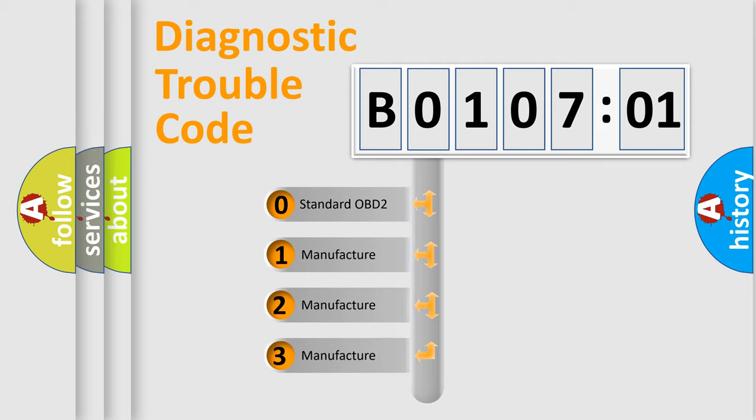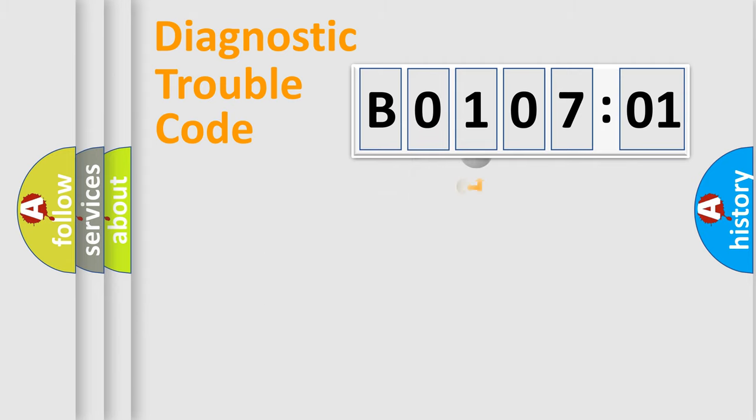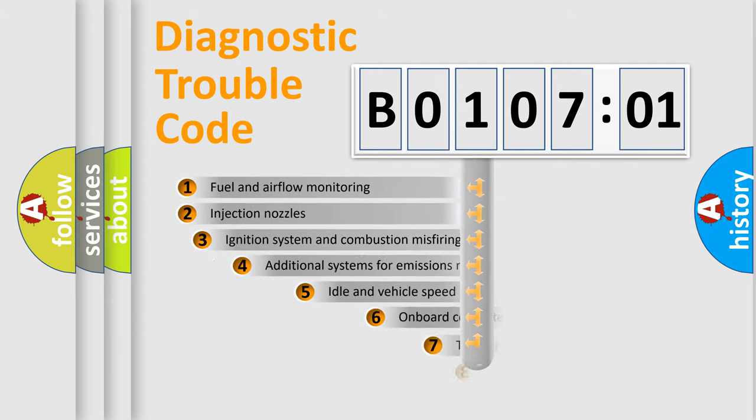If the second character is expressed as zero, it is a standardized error. In the case of numbers 1, 2, or 3, it is a more prestigious expression of the car-specific error.